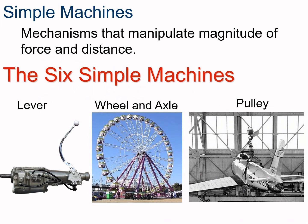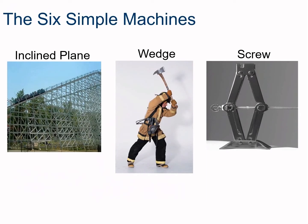This is a Robot Riedinger production on simple machines. There are six different simple machines: the lever, the wheel and axle, the pulley, the inclined plane, the wedge, and the screw.